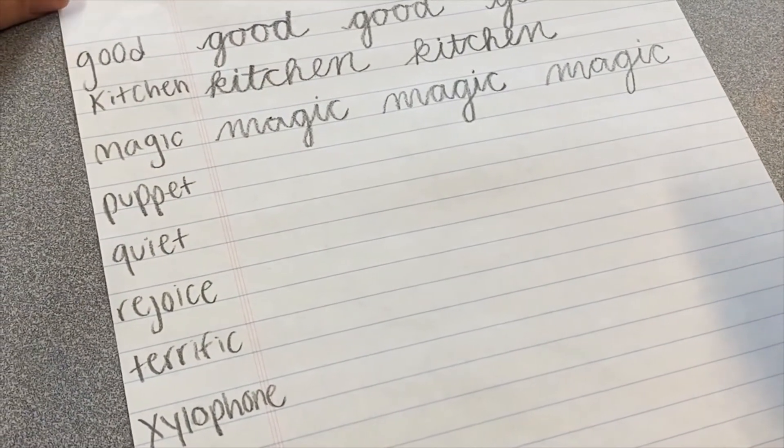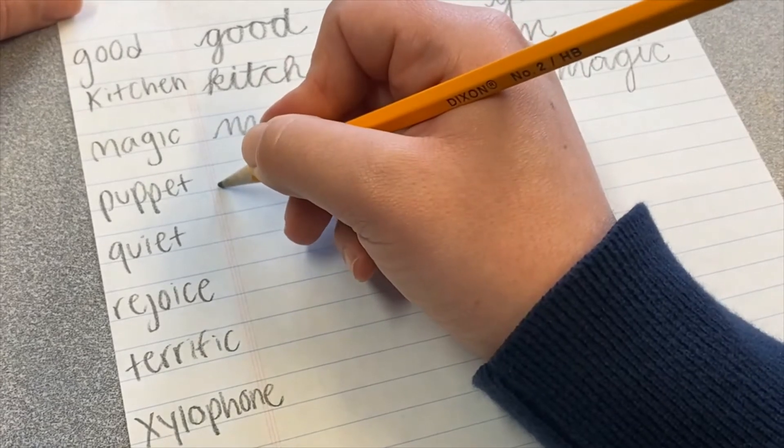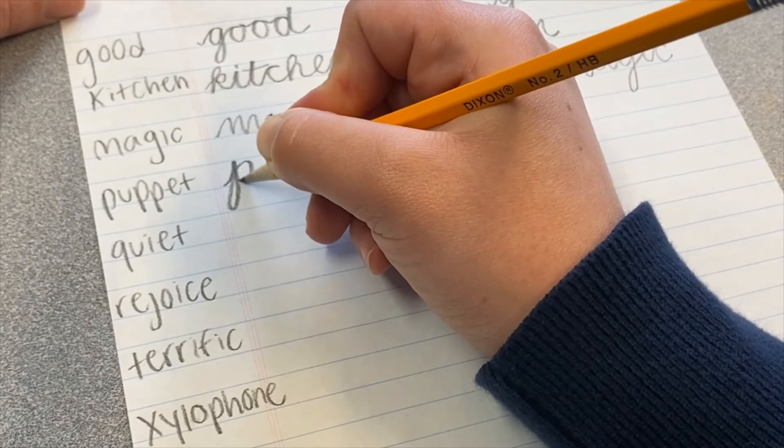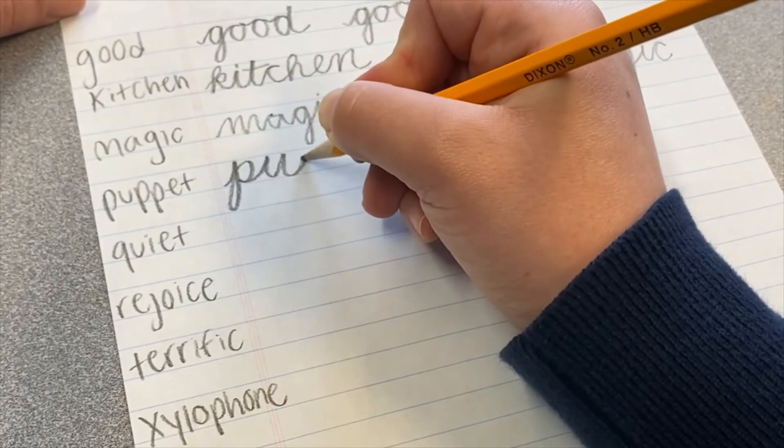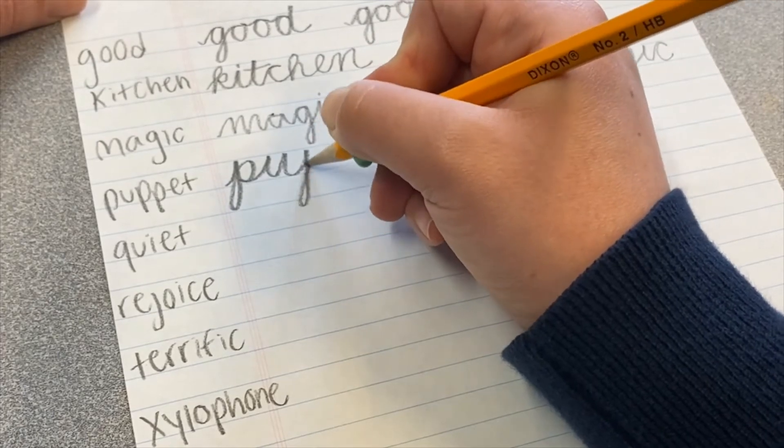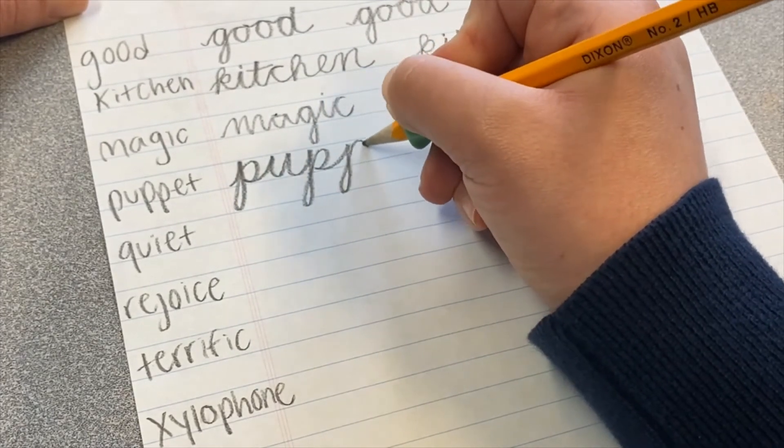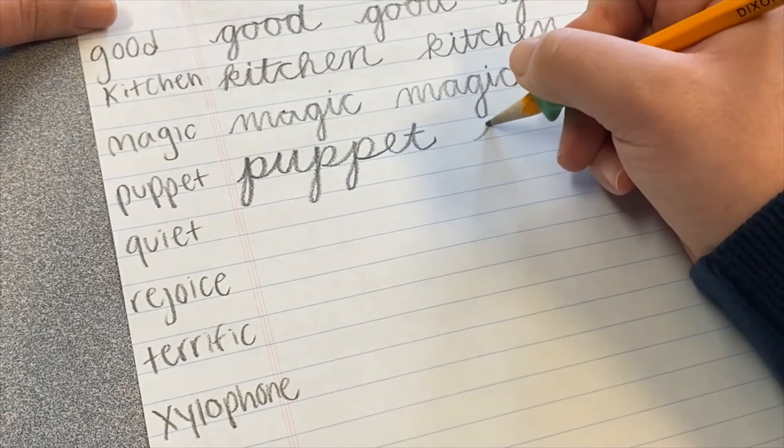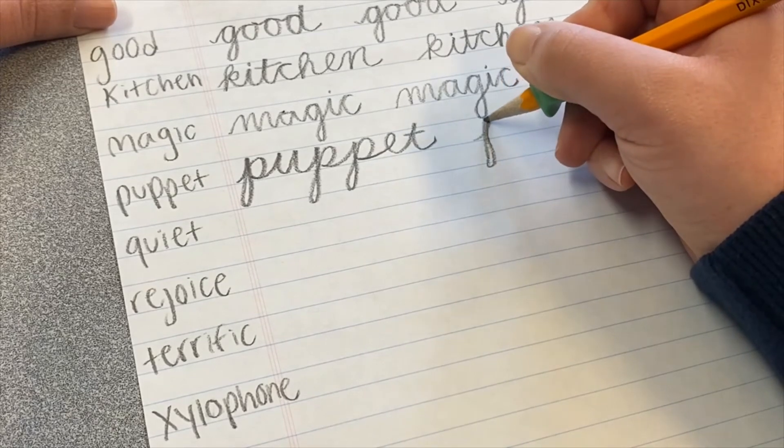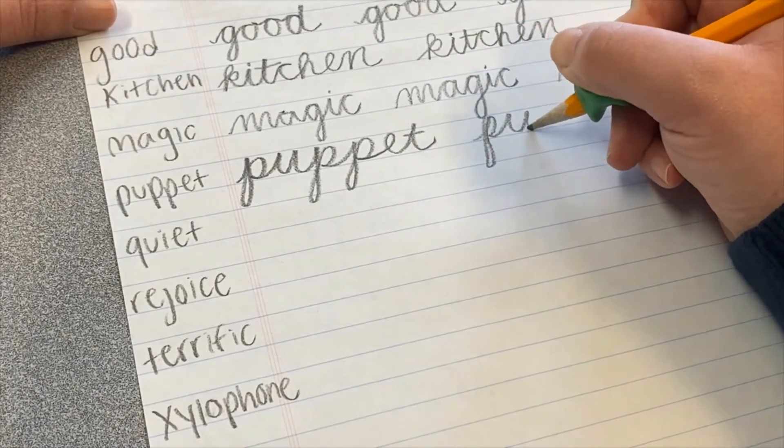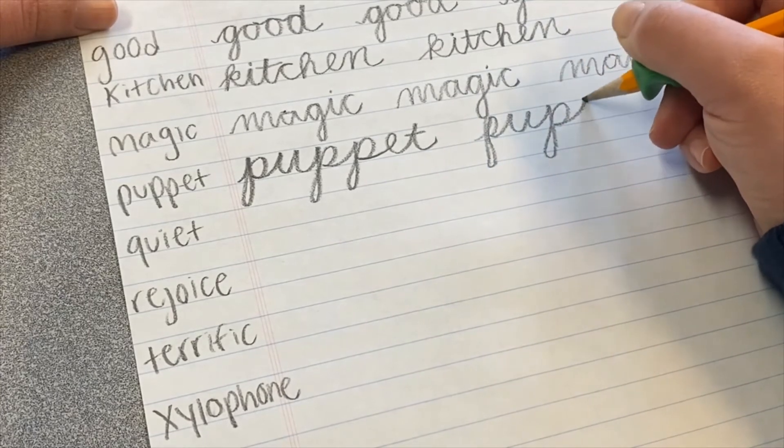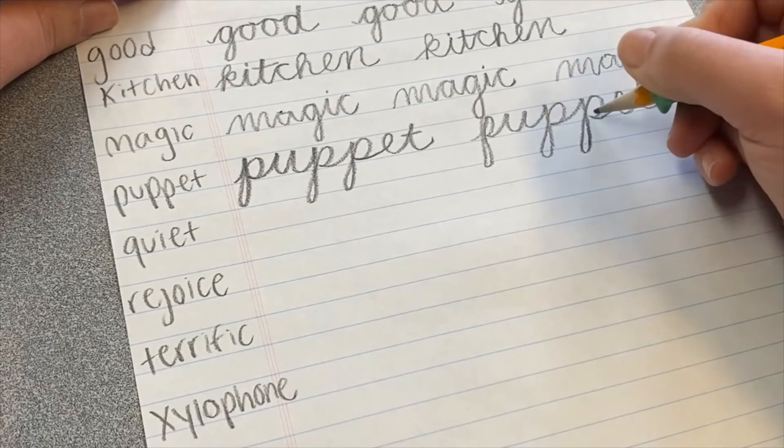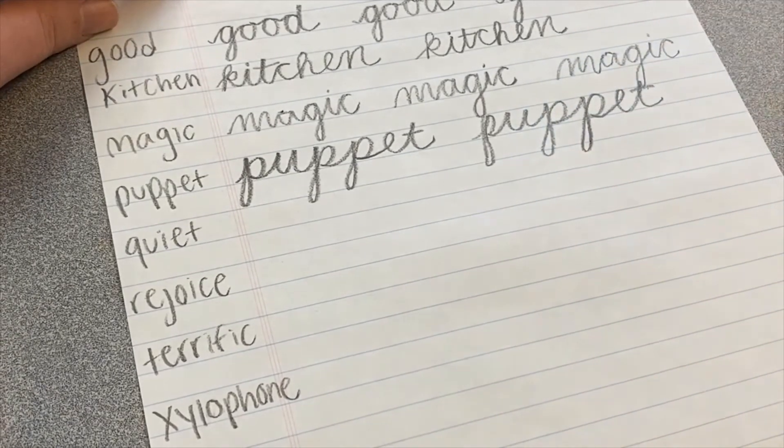Next word we'll do today is the word puppet. So we'll make our P. And then into the U. And then our next P. Then the E. And then a T. Remember the P's have a loop. Puppet. And just making sure that that line is connecting there, which will make it easier for people to read.